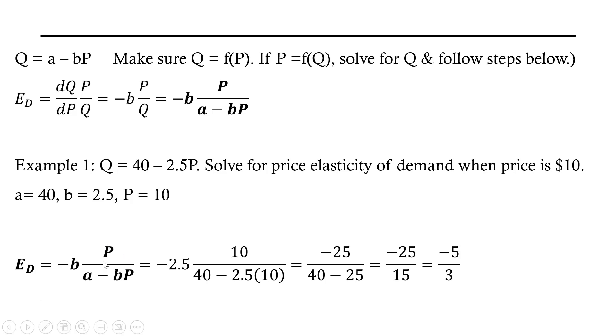Here's our general formula. Now making the substitutions. So for B, we put in 2.5. In the numerator up here for P, we're plugging in 10. And then in the denominator, it's 40 minus 2.5 times price, which is $10. And now simplifying.